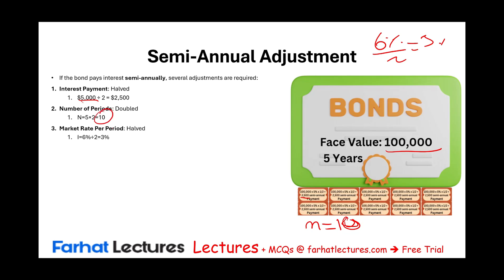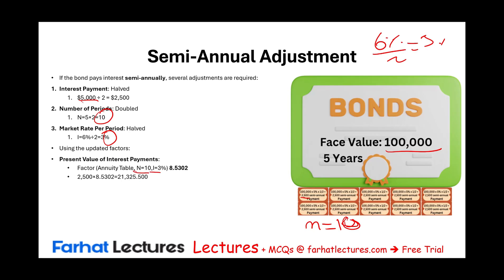For the semi-annual computation, each coupon payment is $2,500. Using the present value annuity table with n=10 and i=3%, the factor is 8.5302. Taking $2,500 times 8.5302, the coupon payments alone are worth $21,325.50. That is the coupon payment component of the semi-annual bond.